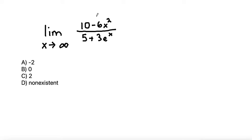Let's start by treating the numerator and denominator as separate functions. So if we have the function, for example, if f of x is equal to 10 minus 6x squared,